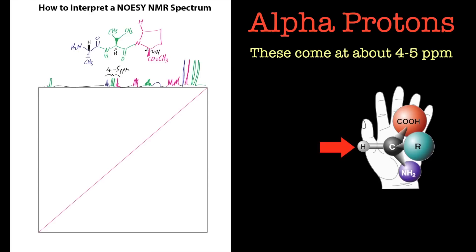They always come around this region so they're really easy to spot for amino acids. But this NMR tutorial for NOESY can be used for anything, not just for peptides or oligosaccharides. We've first of all identified the alpha protons, that's really useful.